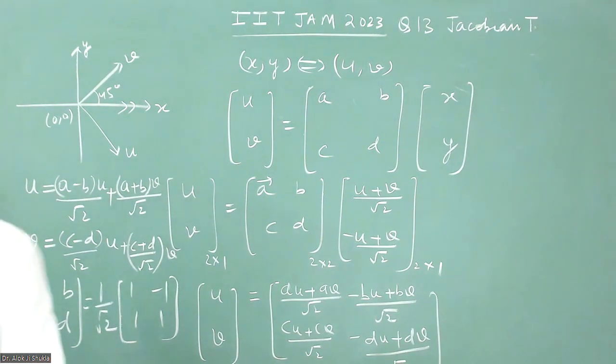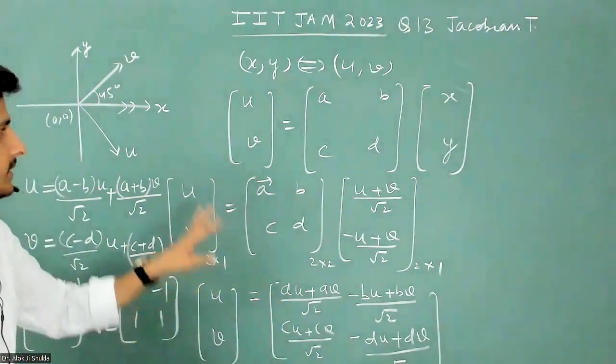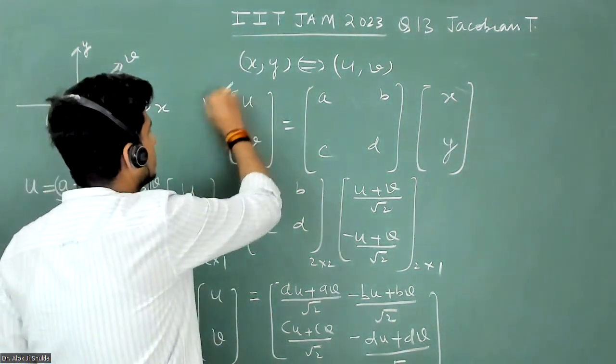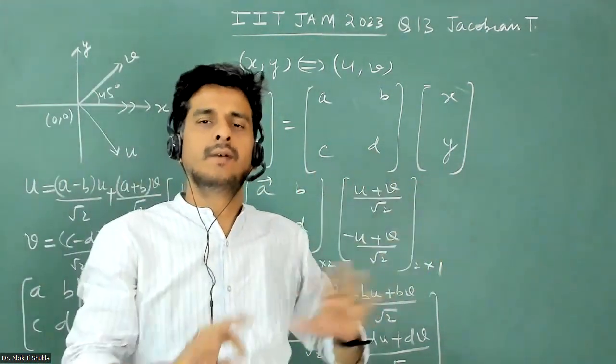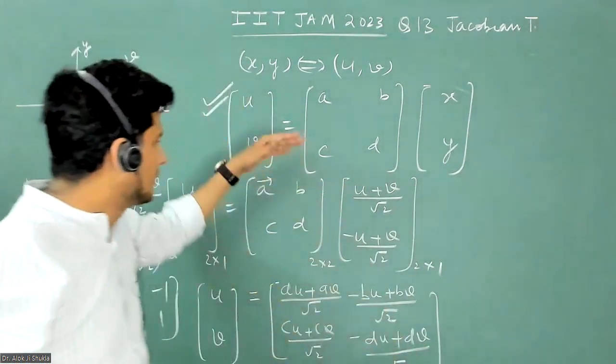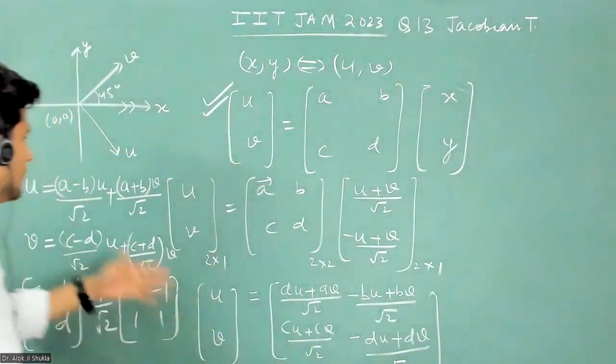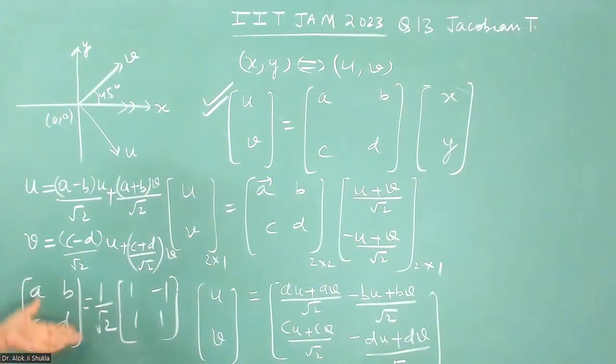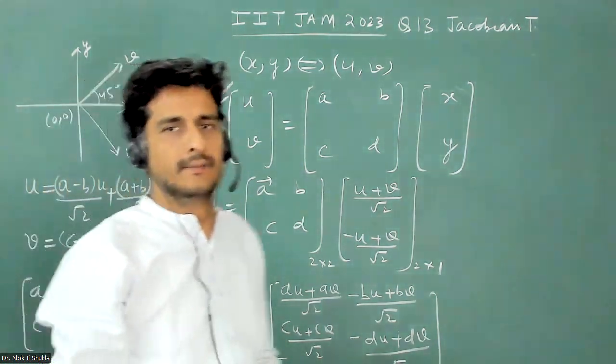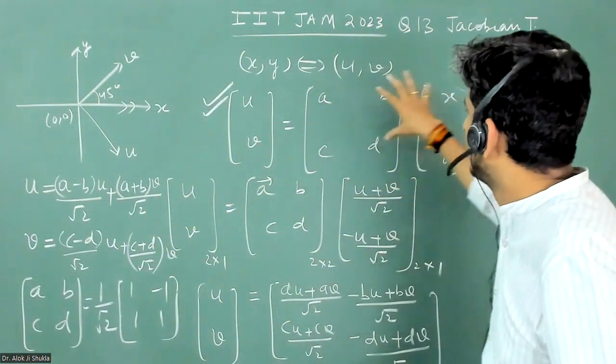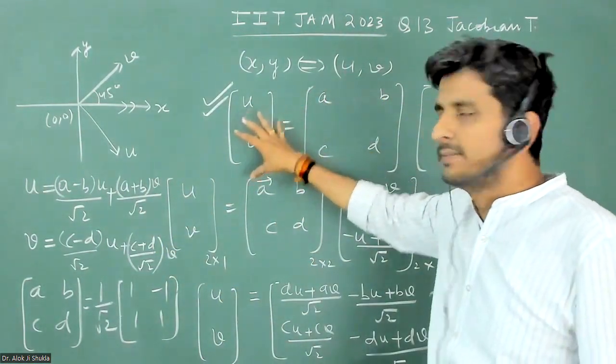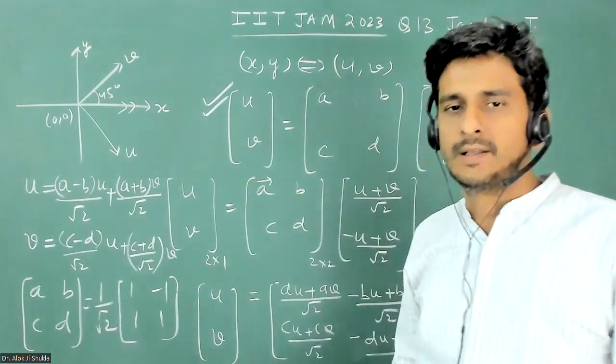So the idea was that once you write this matrix, this is the main idea. Once you write this matrix, everything is over. Just then simple multiplication and comparing the coefficients like solving the equation. That is not a tough thing, but understanding the transformation—how this matrix is operated on this to get this matrix—is the most important. Thank you.